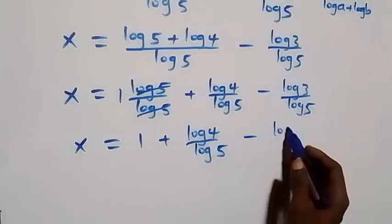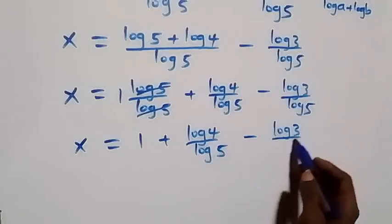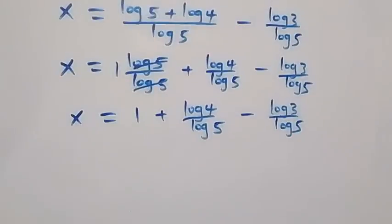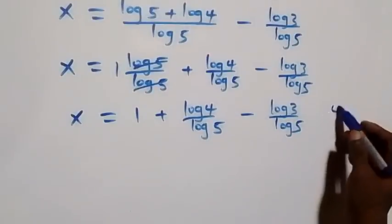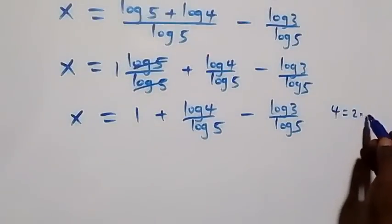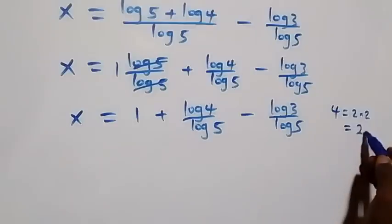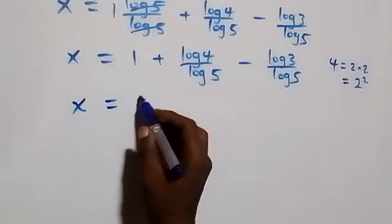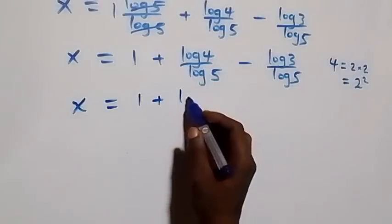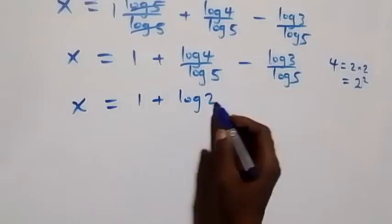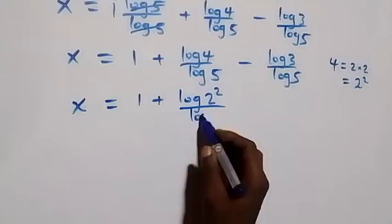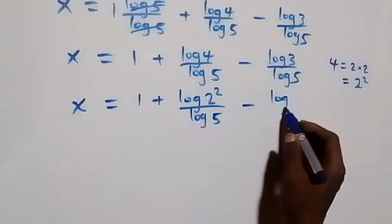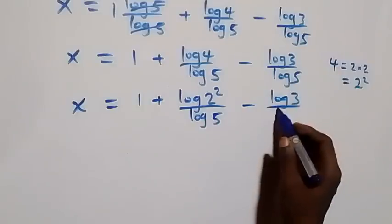Also, 4 can be written as 2 times 2, which equals 2 squared. So what we have here becomes x equals to 1 plus log 2 squared over log 5, minus log 3 over log 5.